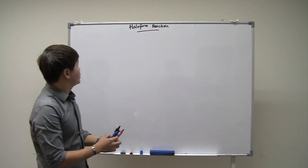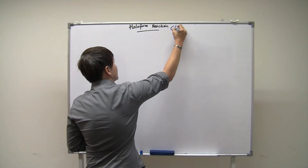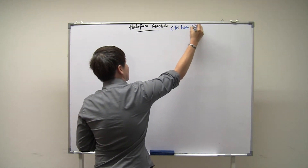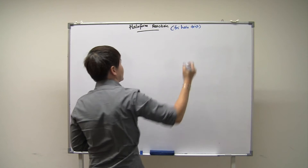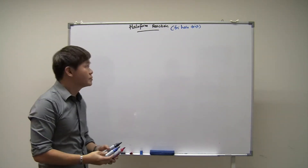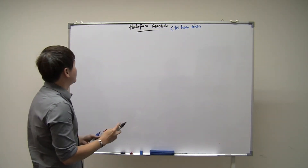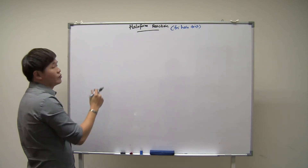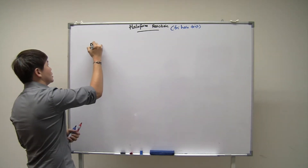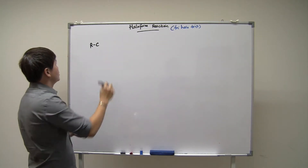Some people call this the trihalo reaction, or the trihalo test. If the halogen is iodine, then it's called the triiodomethane test. This reaction is covered in two different chapters in organic chemistry — we learn that this reaction is covered in the chapter on alcohols.